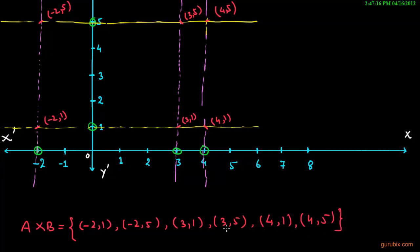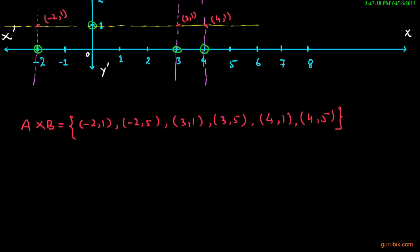This is how we can find A × B, the Cartesian product of two sets by graphical method. Thank you.